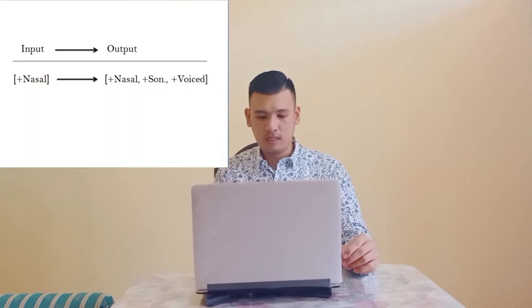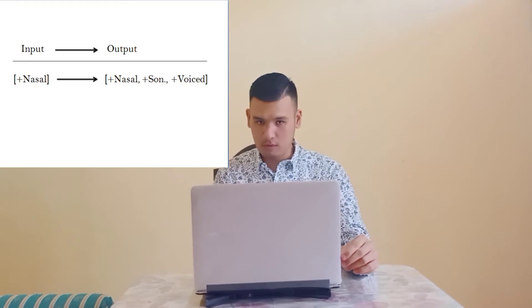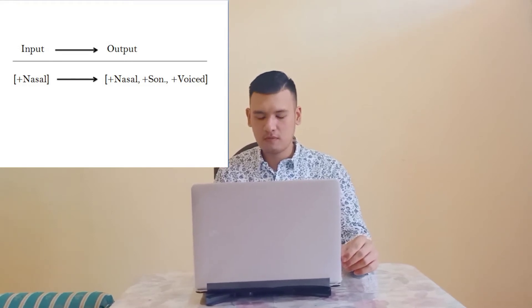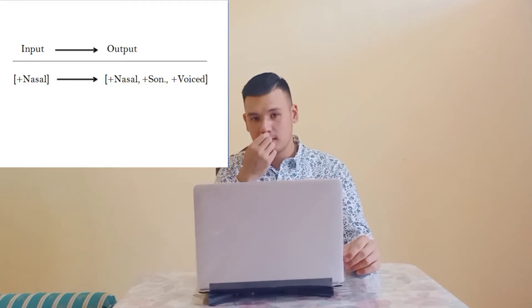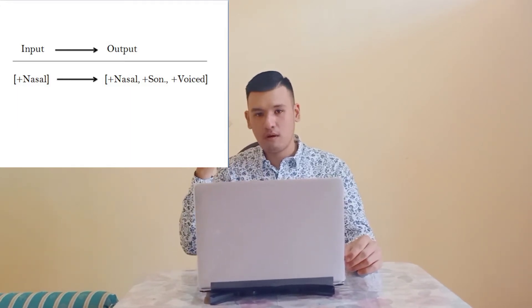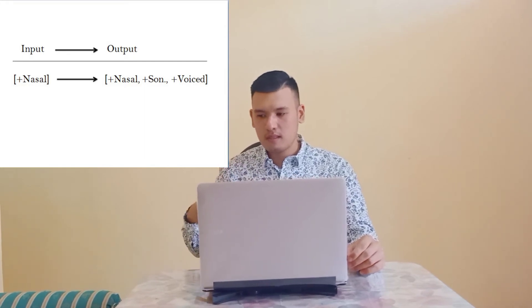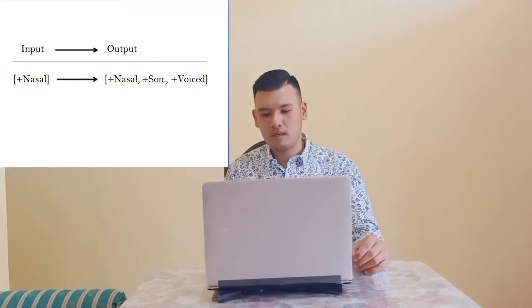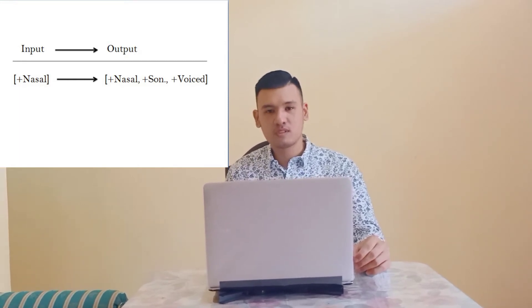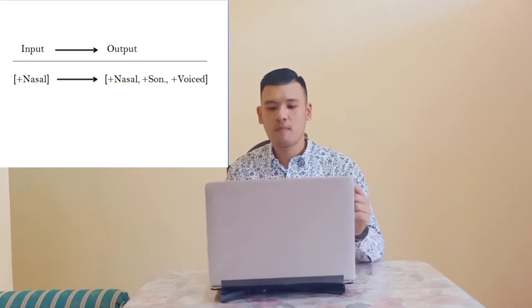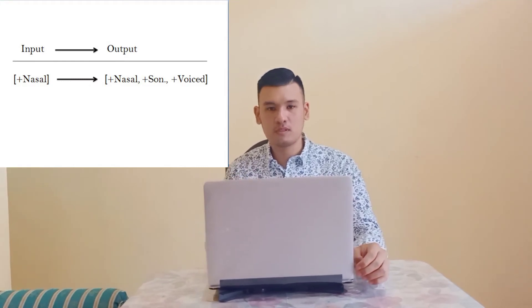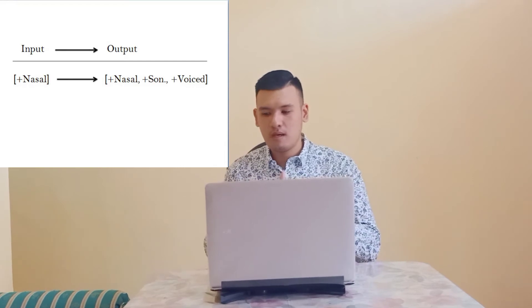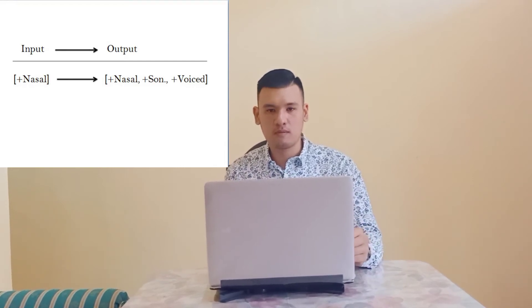Let's see the example on the slide. As you can see, there is the input and output figure. For example, a sound that is firstly nasal as the input — the mental representation — when the output is produced, it may become nasal, sonorant, and voiced. So it is evaluated through a process from input to output, and it becomes a matter of how optimal the production of the output is.